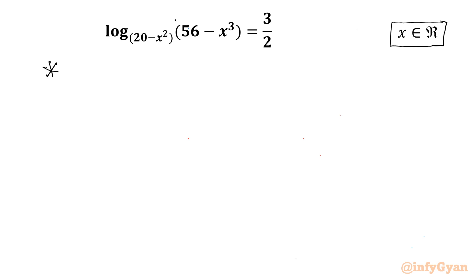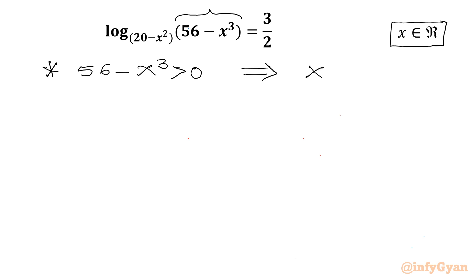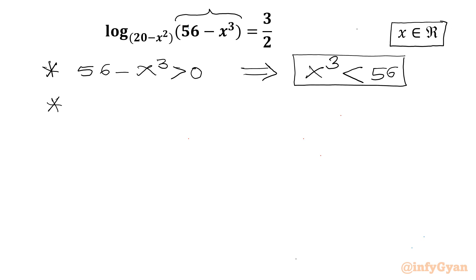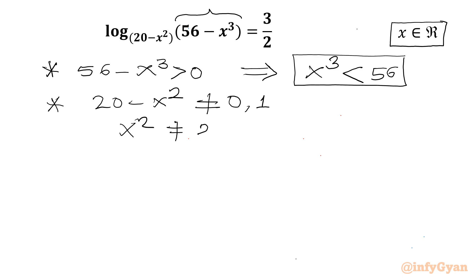The first condition: (56 minus x³) must always be positive for real solutions, so x³ must be less than 56. The second condition: the base (20 minus x²) cannot equal 0 or 1, so x² must not equal 20 or 19.